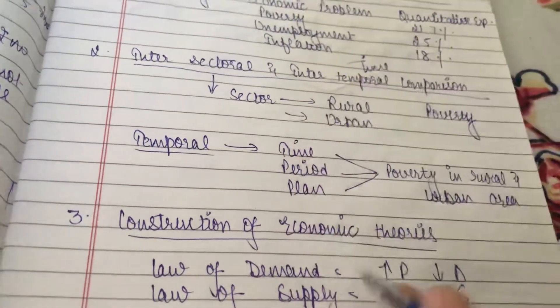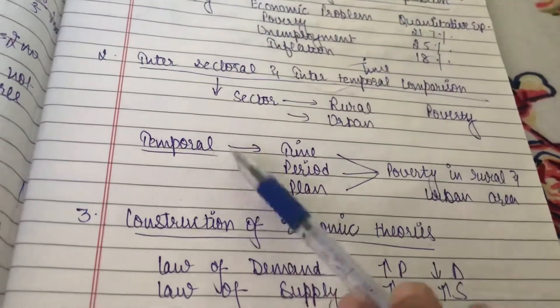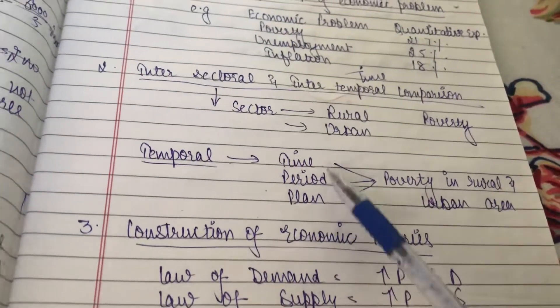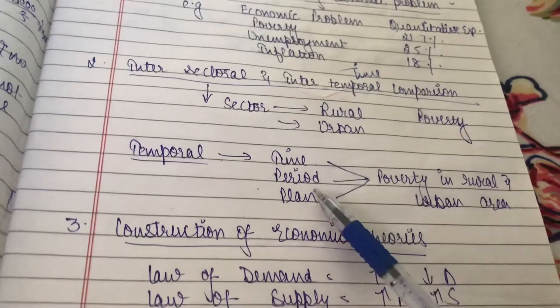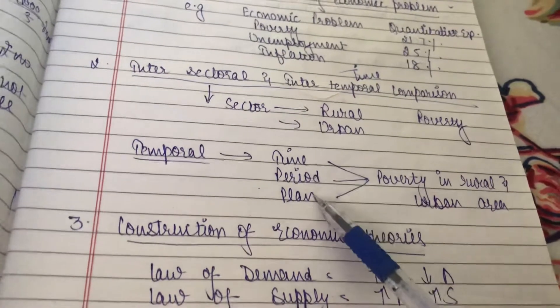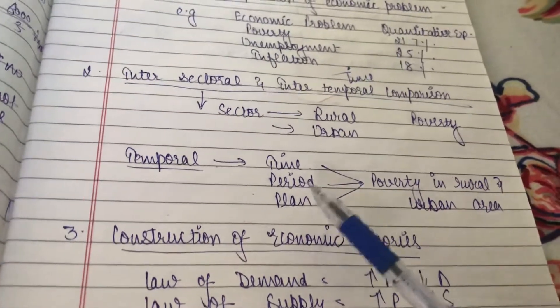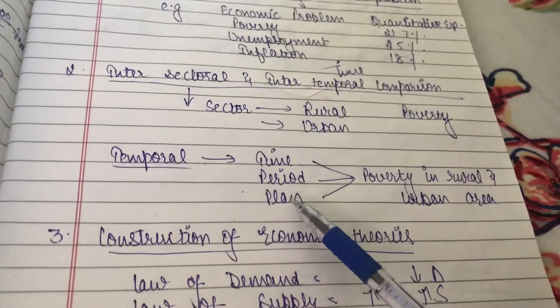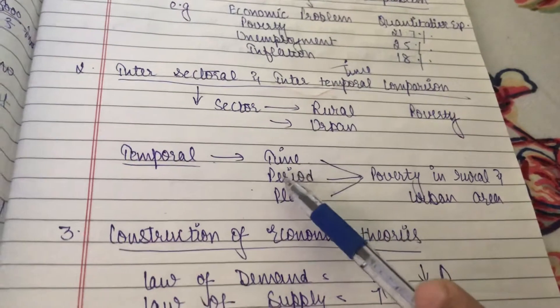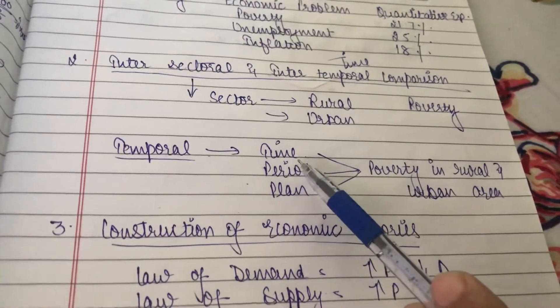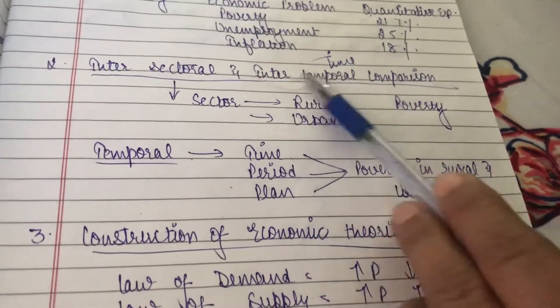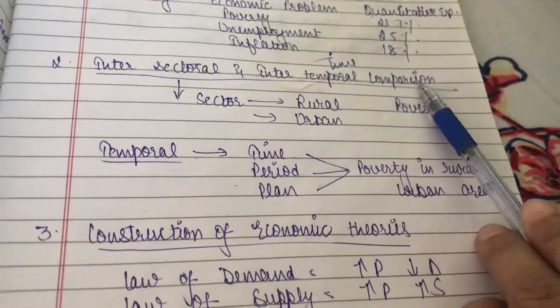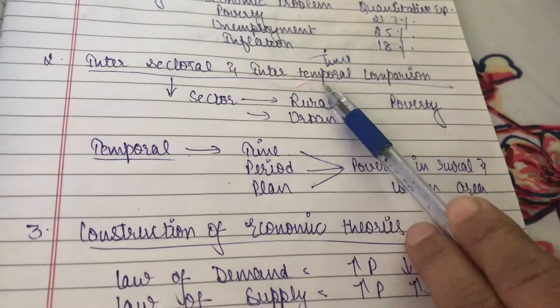Intertemporal means time-wise comparison. So time-wise we can do the comparison. We have different plans — one-year plans, five-year plans — and by the intertemporal comparison using statistics, those can be studied.